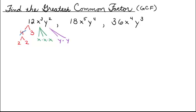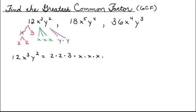So the expression 12x³y² is made up of the factors 2 times 2 times 3 times x times x times x times y times y.